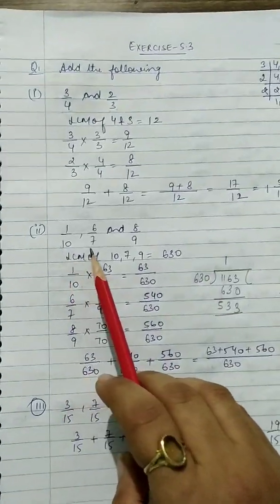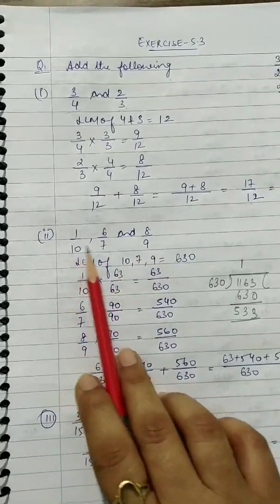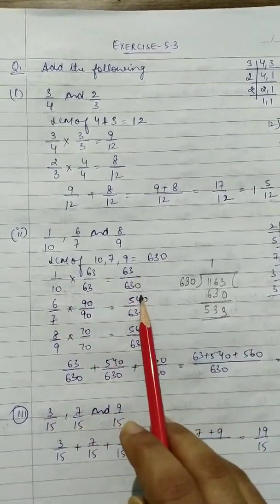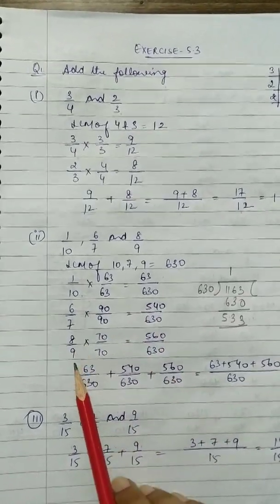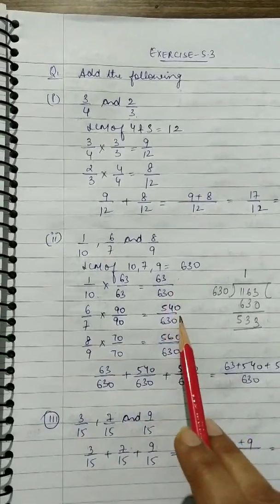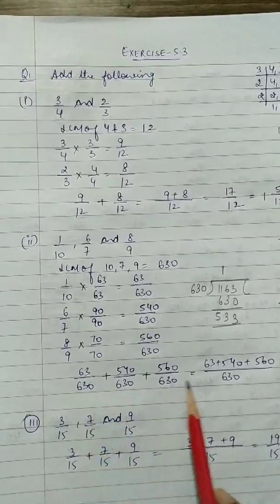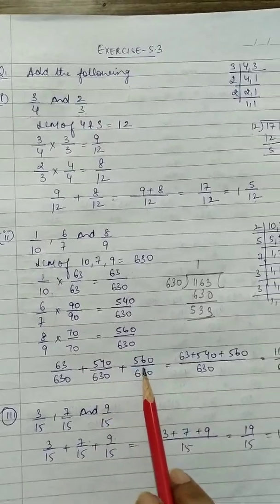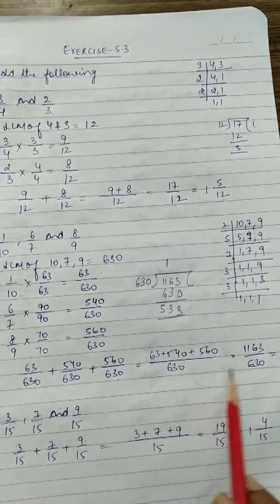Next is 1/10, 6/7, and 8/9. Again it is an unlike fraction, so convert into like fractions. The LCM of 10, 7, and 9 is 630. So 1/10 × 63 = 63/630, 6/7 × 90 = 540/630, and 8/9 × 70 = 560/630. Now add them: 63/630 + 540/630 + 560/630. The denominator is 630 and the numerator is 63 + 540 + 560, which gives 1163/630.